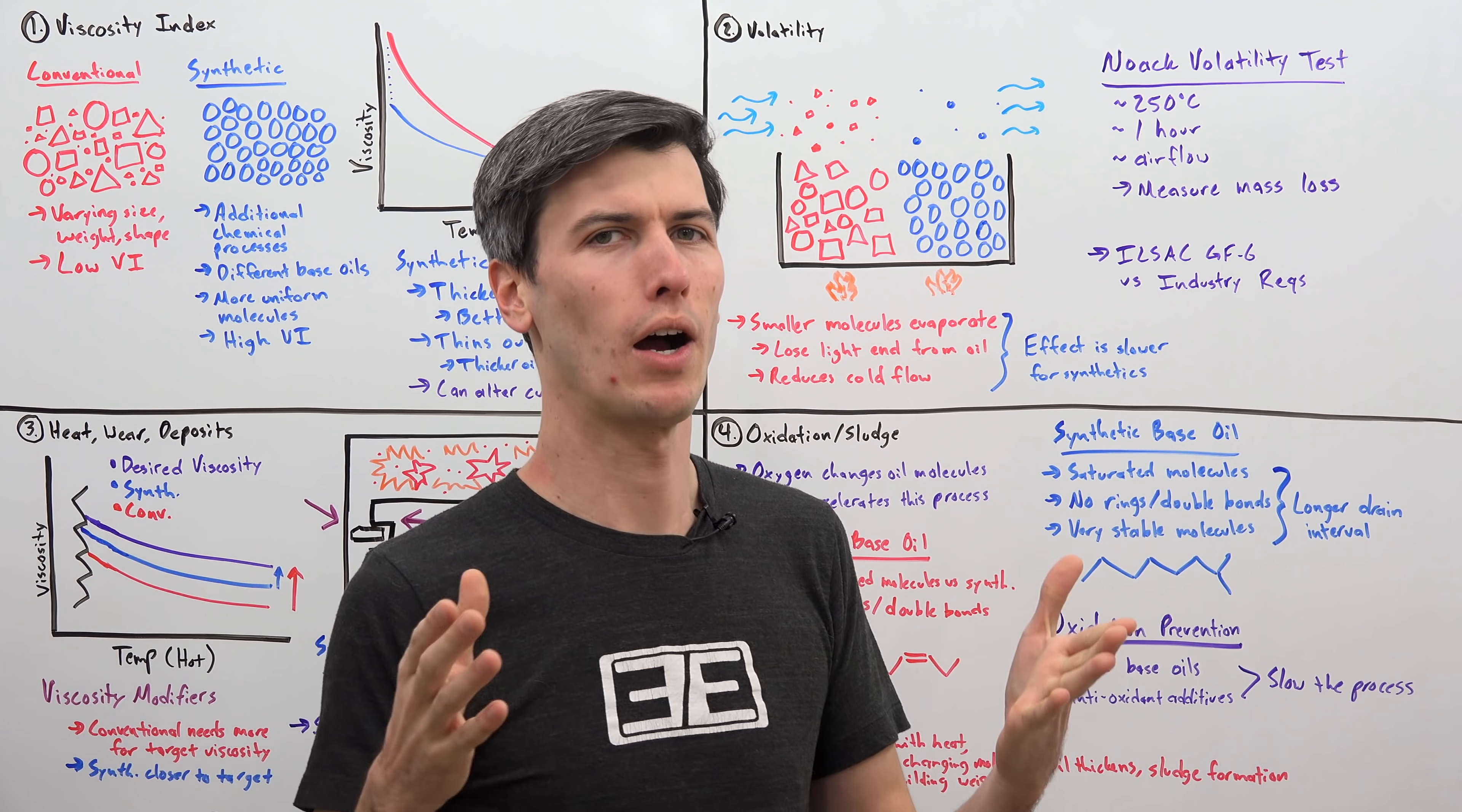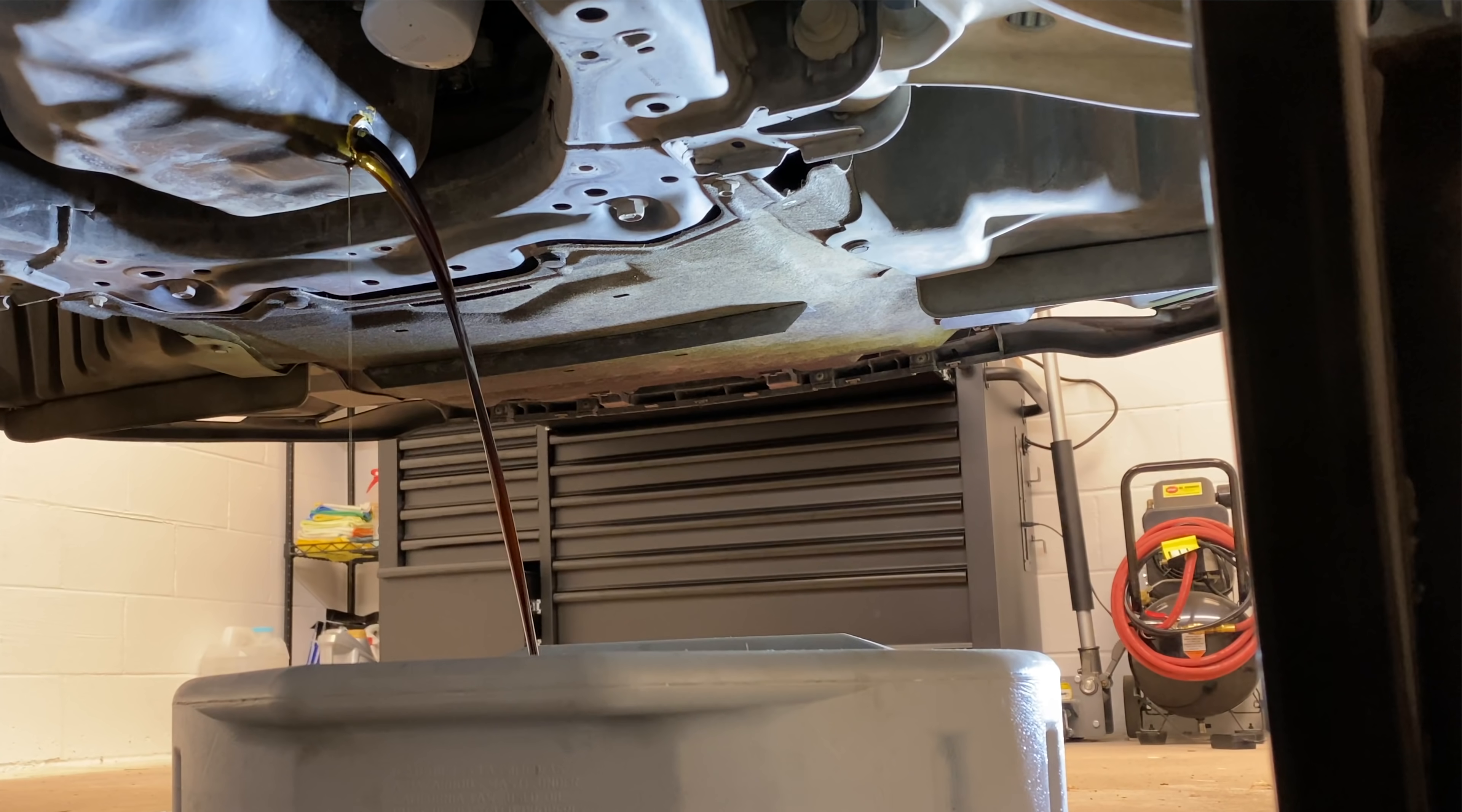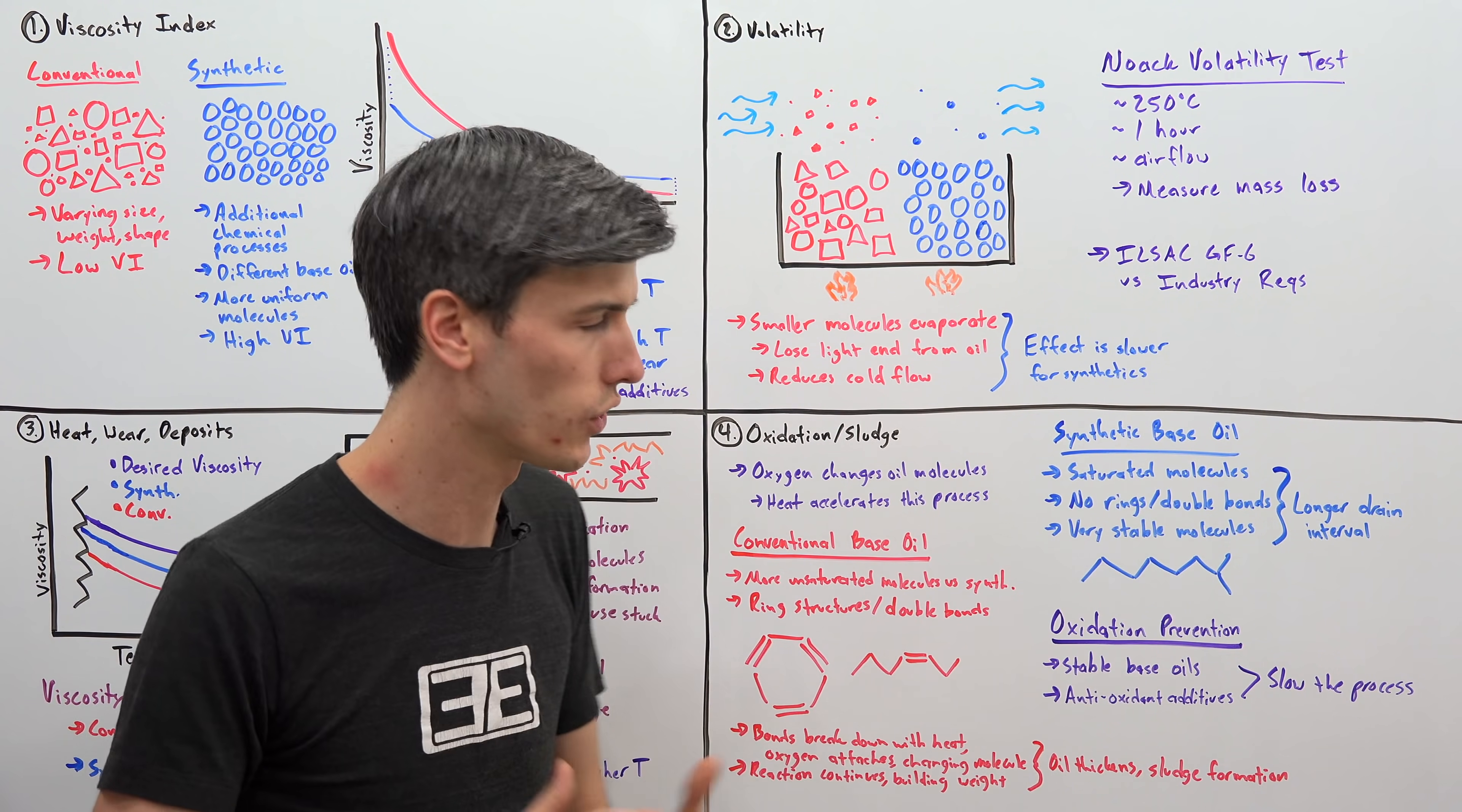Finally, we get to oxidation. This is when oxygen reacts with the oil and starts to change it. If you leave your car out in the rain, you can look at the brake rotors the next day, and you might see that some rust has built up on those rotors. That's oxidation, oxygen reacting with those brake rotors. A similar thing happens with motor oil. Oxygen will react with it and change it, and so this will actually start to form sludge and increase the molecular weight of the molecules within oil, so it'll start to get really thick, and then you have to change the oil. Heat accelerates this process of oxidation.